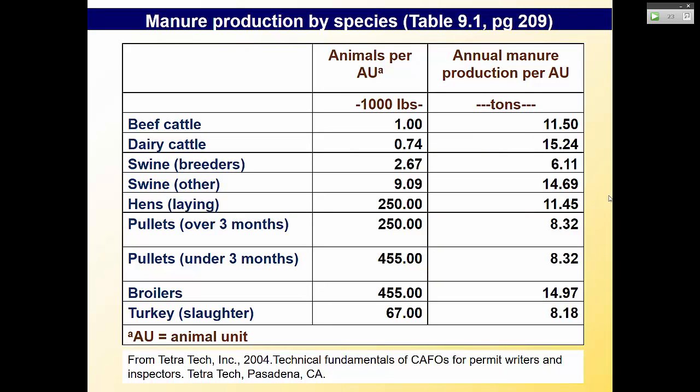Here's Table 9.1 on page 209. One beef cow is assumed to be 1,000 pounds, or one animal unit. A dairy cow is 0.74 animal units — assumed to weigh a little less. For broiler poultry, it takes 455 of them to make 1,000 pounds. These assumptions are necessary when planning, because you're projecting how much manure will be produced — you can't weigh every animal individually.